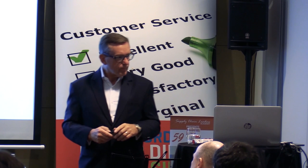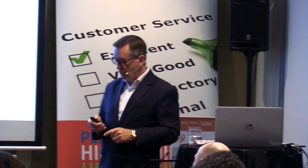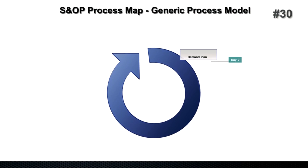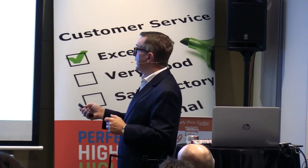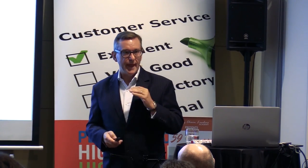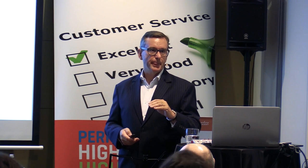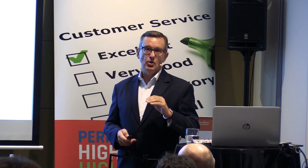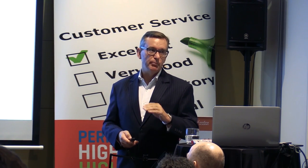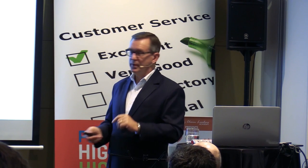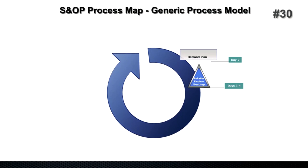S&OP is a cyclical process. It starts at the beginning of the month — you've got to have a statistical forecast and a demand plan as a starting point, produced on or about working day two of each month. The statistical forecast is always going to be better than the manual forecast and better than a spreadsheet, so you need proper tools to do that.